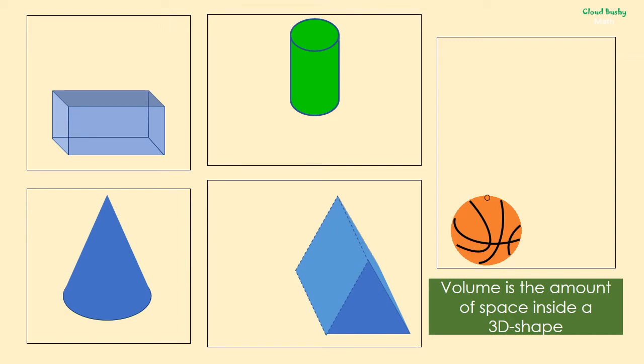Now, volume is the amount of space enclosed by a three-dimensional shape like a cylinder, a cuboid or rectangular prism, a triangular prism, a cone, or a sphere.